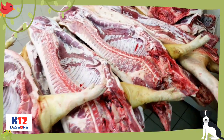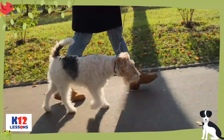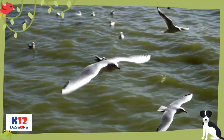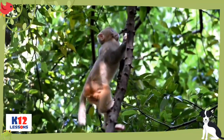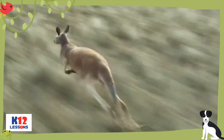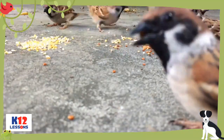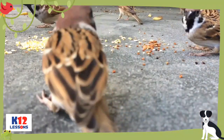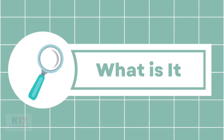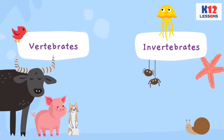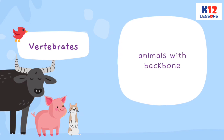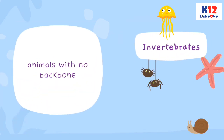Vertebrates are animals with backbones and have varying body parts used in walking, swimming, flying, climbing, and hopping. They eat grass, meat, insects, and seeds as their food. Animals found in the locality are classified into vertebrates and invertebrates. Vertebrates are animals with backbone while invertebrates are animals with no backbone.